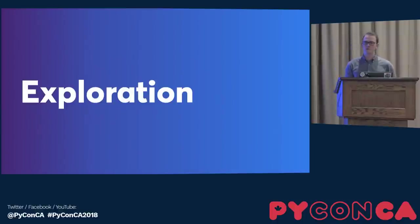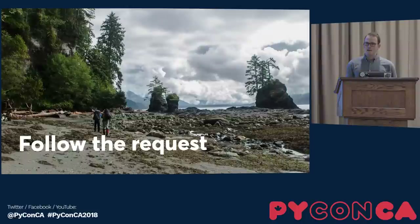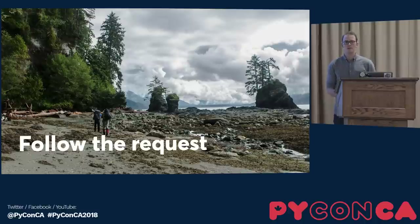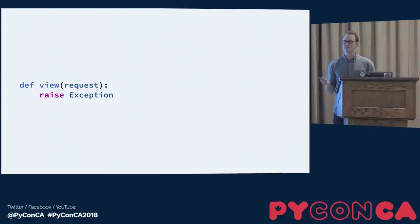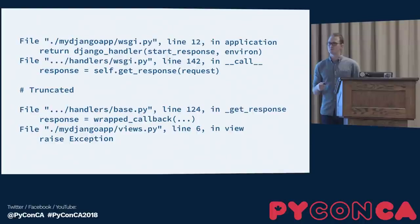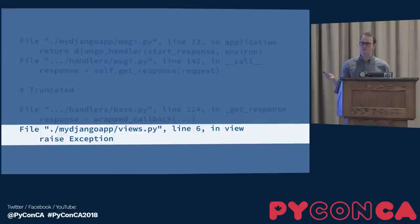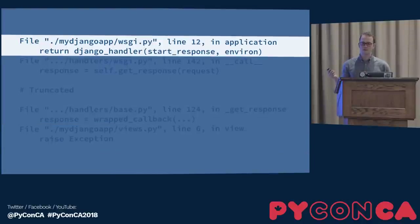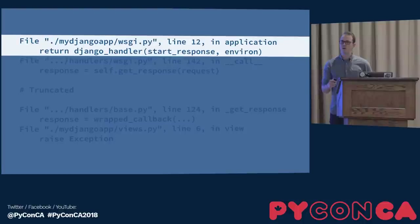I knew I was going to have to explore the codebase more. A great suggestion was made to me: follow the request. If you only know how that request works — getting the URL into your view — follow it back down the stack. An easy way to do this is to set up a URL route, raise an exception in the view, and you'll generate a big stack trace. In Django debug mode, that even shows up in the browser, which is super convenient.